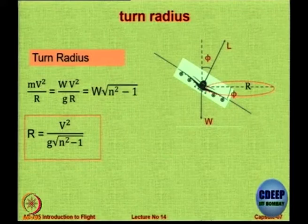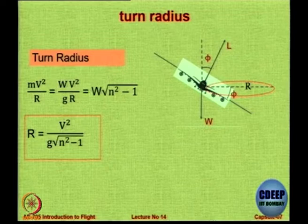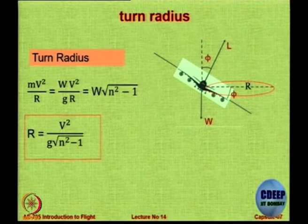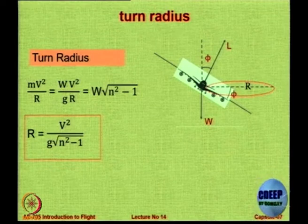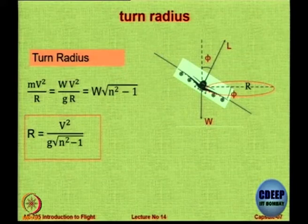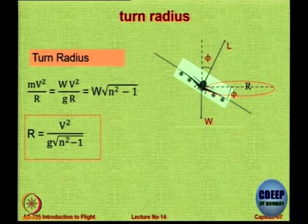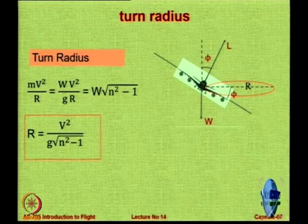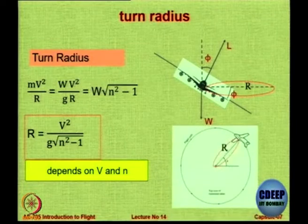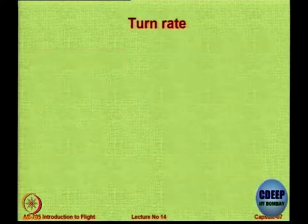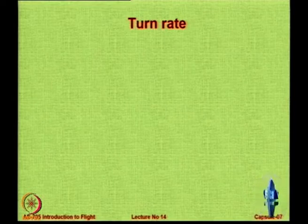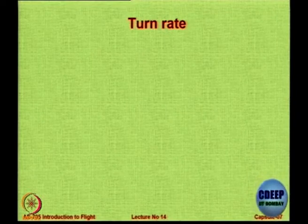What does the turn radius formula tell us? If you want a tighter turn — small r — you should fly at a lower speed, since the same aircraft flying at a lower speed will give you a tighter turn, or you can increase the load factor. When N is large, r is going to be small. V and N are the two factors that define the radius of the turn. This definition gives the tightest turn or shortest radius.